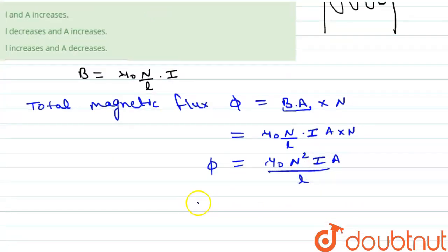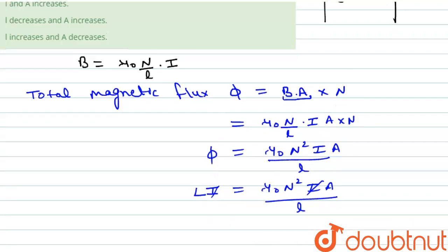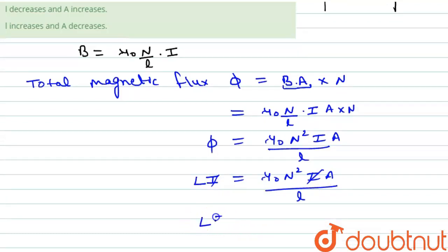So as we know that φ is equal to LI, which will be equal to μ₀N²IA/L. So after simplification, we will get L is equal to μ₀N²A/L.